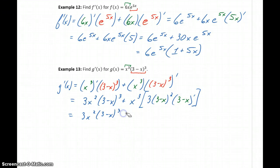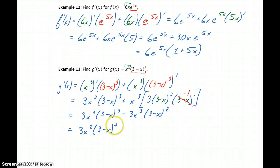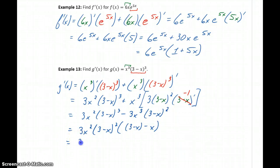The derivative of 3 minus x is negative 1, so we get negative 1 times 3x cubed, giving us negative 3x cubed times 3 minus x squared. What we have in common is 3x squared and 3 minus x squared in both terms, so we can factor out 3x squared times the quantity 3 minus x squared. This leaves 3 minus x in the first term and minus x in the second term, giving us 3x squared times the quantity 3 minus x squared, times 3 minus 2x.